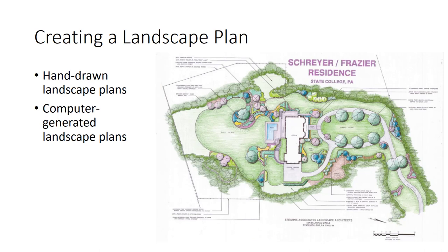There are two ways to create a landscape plan: hand-drawn or computer-generated. Both methods produce excellent results. Drawing instruments such as paper with a pencil or pen and basic drafting equipment such as a ruler, drafting bench, and a few other pieces are necessary to produce a planting plan. Computer-aided design programs are commonly used to produce computer-generated landscape plans. In recent years, the use of computers has become very popular; however, it is still important to be familiar with both methods to increase your job prospects.